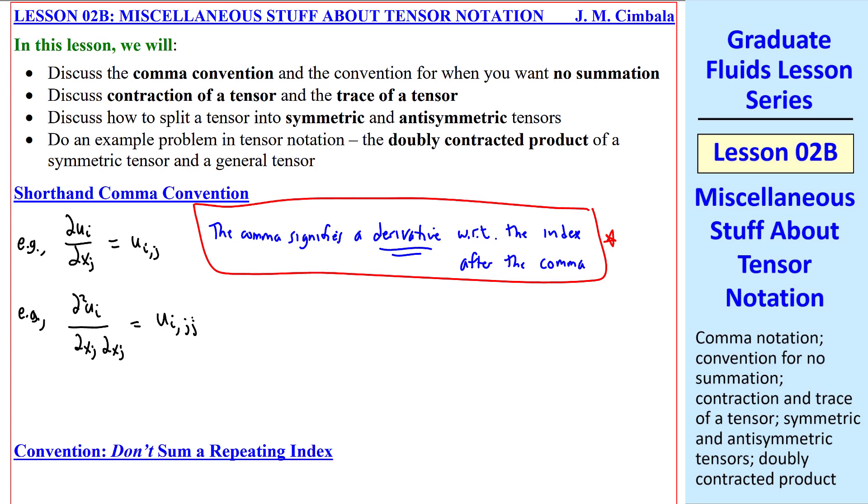The two j's after the comma means we're taking the derivative twice with respect to xj. This, by the way, is the Laplacian of ui, or del squared u in vector notation.